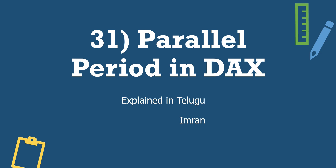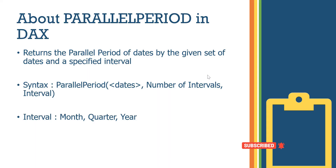With Parallel Period, we are flexible to shift either one year, two years, or more — forward or backward — depending on our requirement. Parallel Period returns the parallel period of dates by a given set of dates and specified intervals.